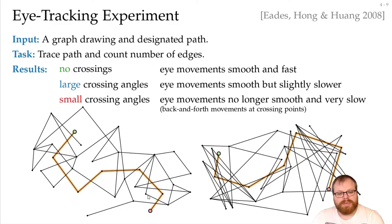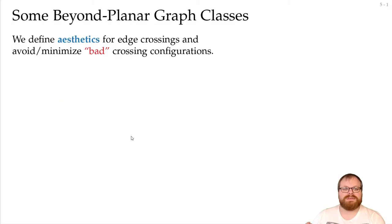And to have few crossings on the path, it's not only important that we have few crossings in total, but also that all of the edges are not crossed too many times. So from these findings, some beyond planar graph classes can be defined. And we do those by defining aesthetics for the crossings, by finding bad crossing configurations, and avoiding those. I will show you a few examples here.